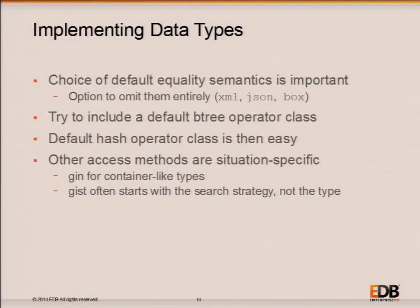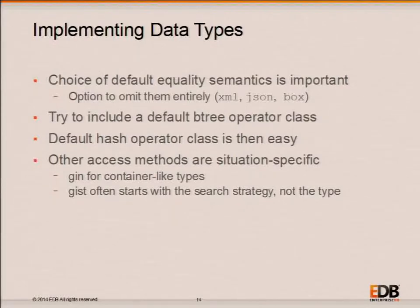Once you have a default Btree operator class, you may as well include a default hash operator class — it's usually relatively simple at that point. Whether to use operator classes of other access methods varies with the nature of your type. For GIN, if your type is a container like an array or XML, that's a good clue to look at adding a GIN operator class. For GIST, it's harder to generalize — typically someone thinks up a new search strategy and then decides which data types it applies to.